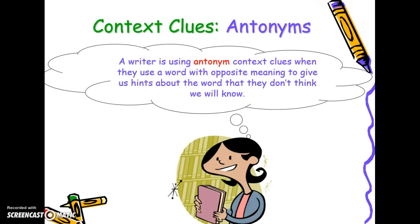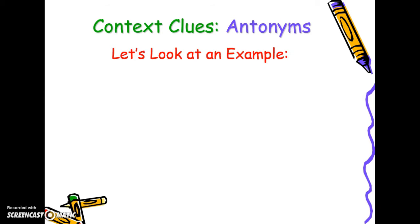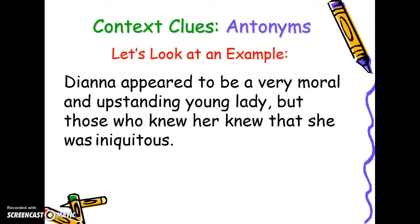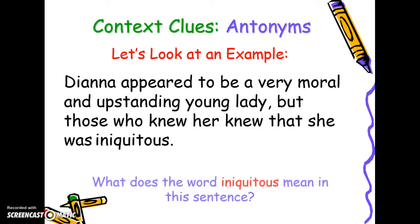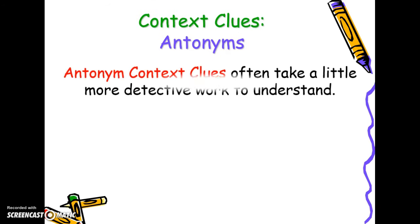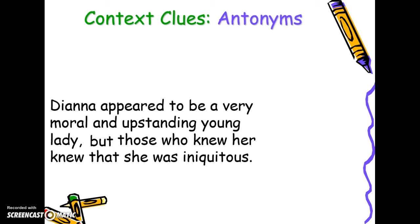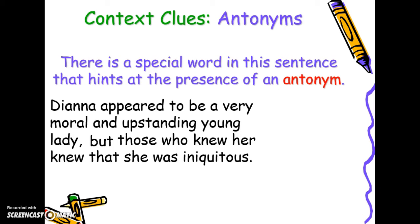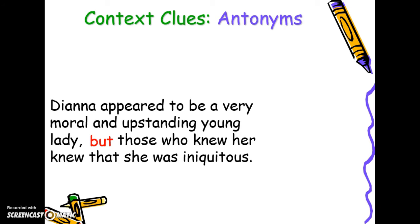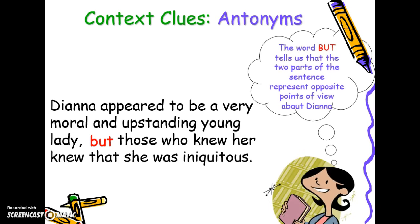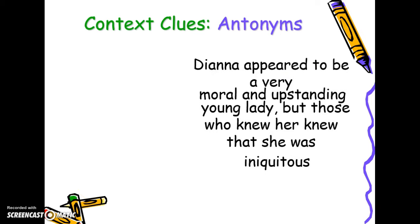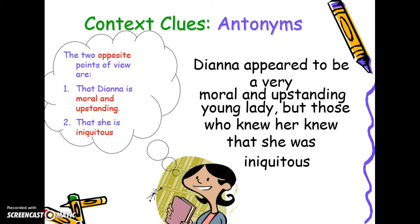Antonyms are the opposite of what the word means. Sometimes by providing the opposite of a word, it helps us have a better understanding of what it is. 'Diana appeared to be a very moral and upstanding young lady, but those who knew her knew that she was iniquitous.' The word but shows us that we're getting an opposite meaning — it represents the opposite point of view. So what you would highlight is moral and upstanding, which is the opposite of iniquitous.